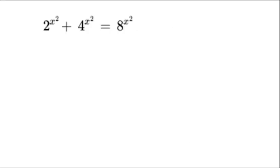Let's look at the consistency between the 2, 4, and 8. There is a definite pattern: 2 is equal to 2 to the power of 1, 4 is equal to 2 to the power of 2, and 8 is equal to 2 to the power of 3.